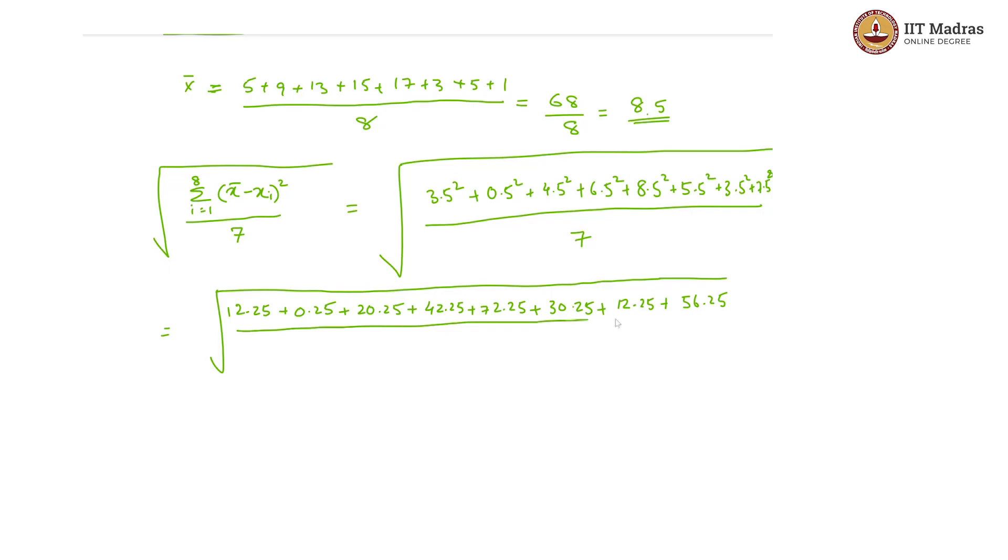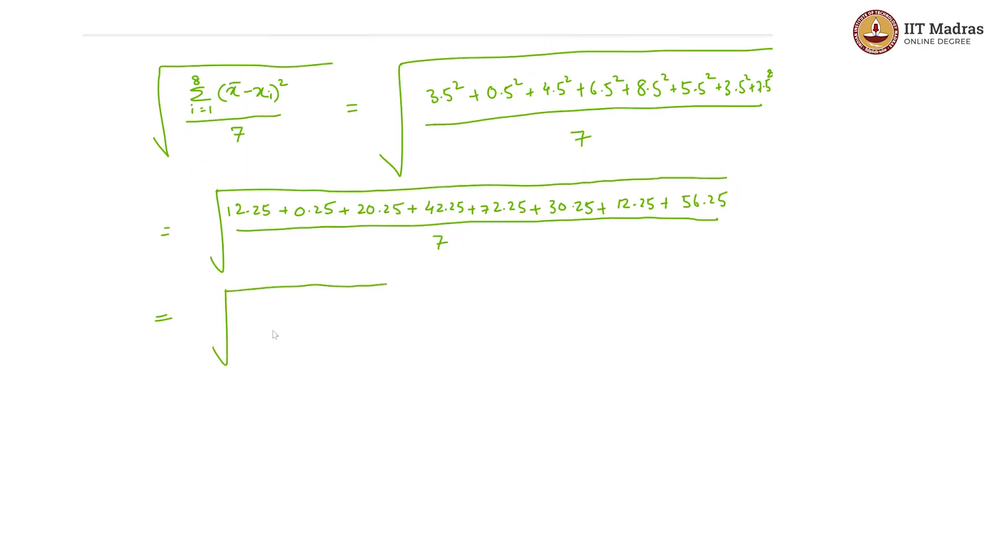Which further gives us square root of, the denominator is still 7, the numerator will give us 246, which is roughly the square root of 35.143, which is again roughly 5.928.